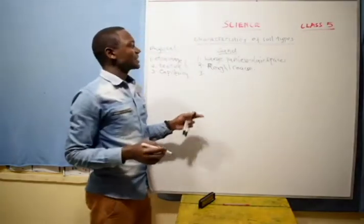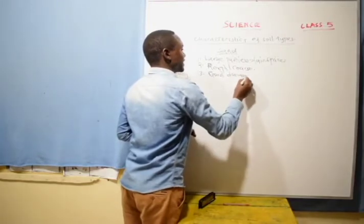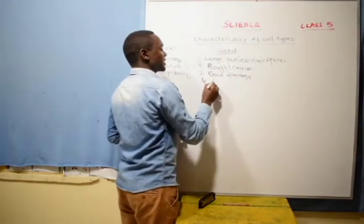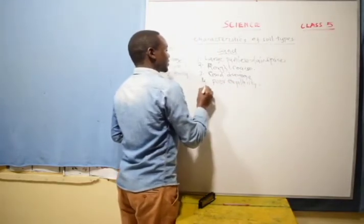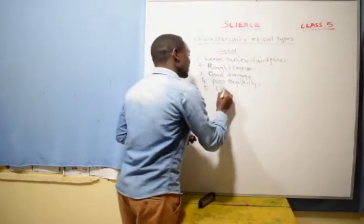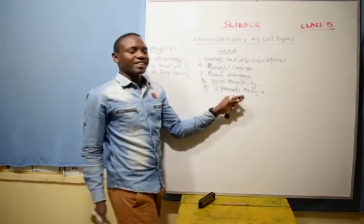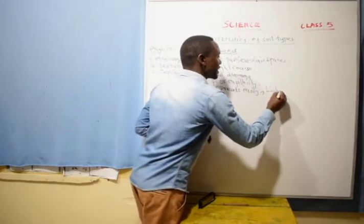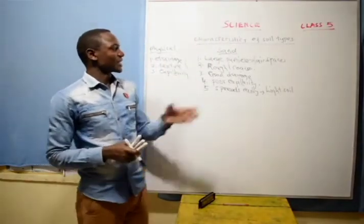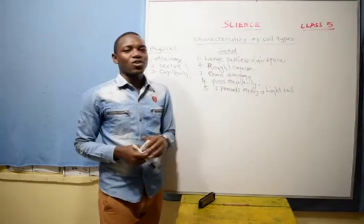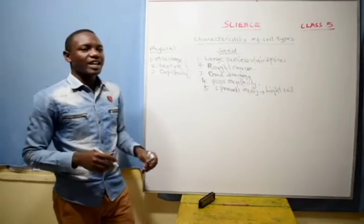Sand soil has very good drainage. And if it has good drainage, it means it has poor capillarity. Sand soil spreads easily, and because it spreads easily, it is called light soil. So sand soil has large particles, large air spaces, a rough or coarse texture, good drainage, poor capillarity, and it spreads easily — that is why it is called light soil.